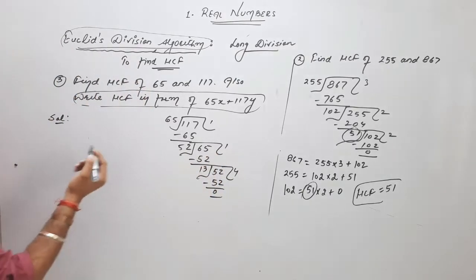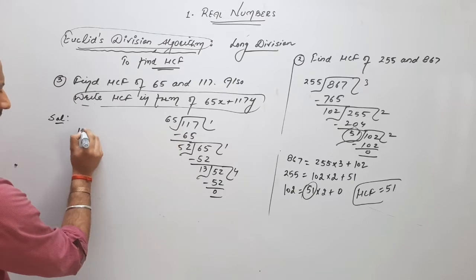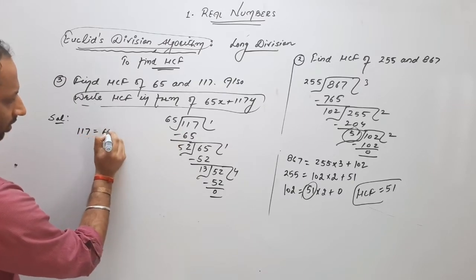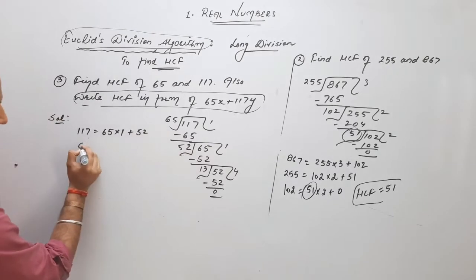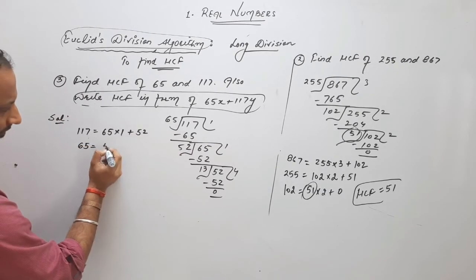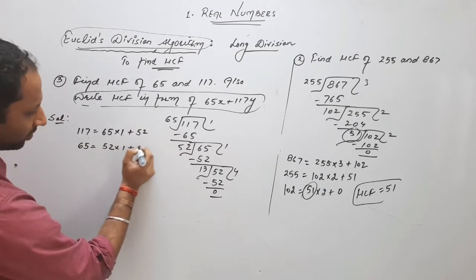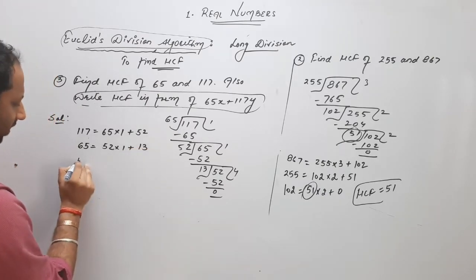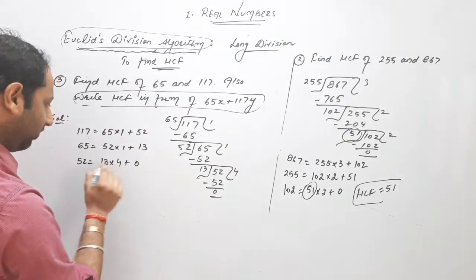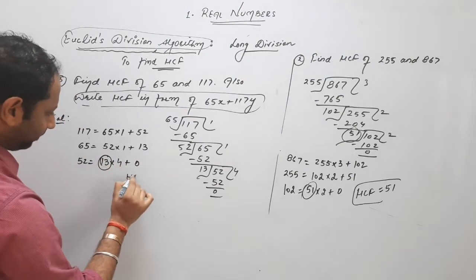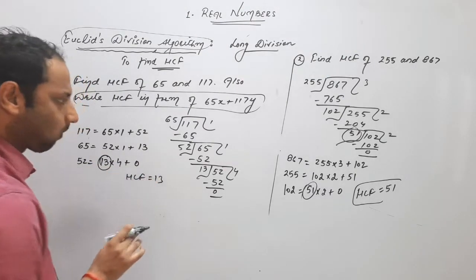So, what is Euclid in very first step? Dividend, divisor, quotient, remainder. In second, dividend, divisor, quotient, remainder. In third, dividend, divisor, quotient. And we know this is HCF. And this we have done.